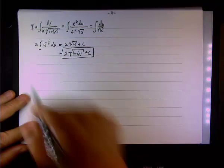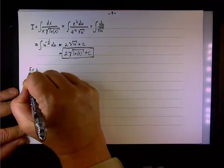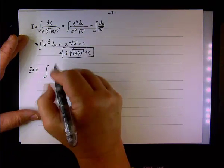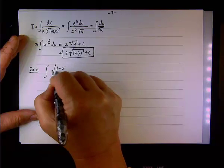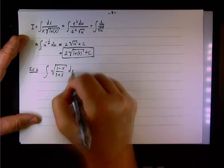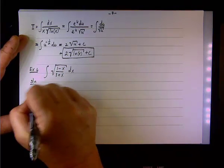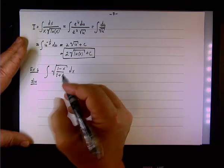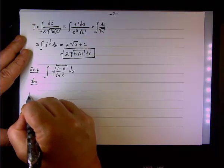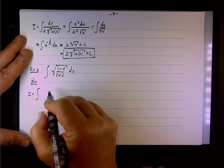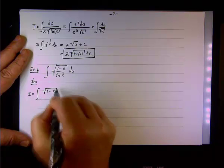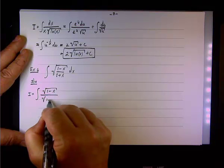Example six: we need to evaluate the integral of the square root of (1 minus x) over (1 plus x), dx. Here the strategy is to multiply and divide by the conjugate to simplify the integrand, and we're going to split the integrand.